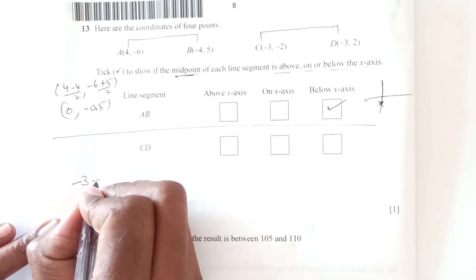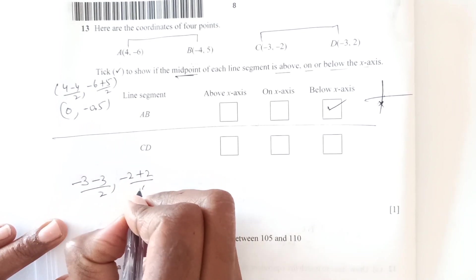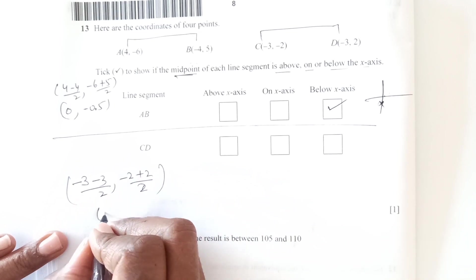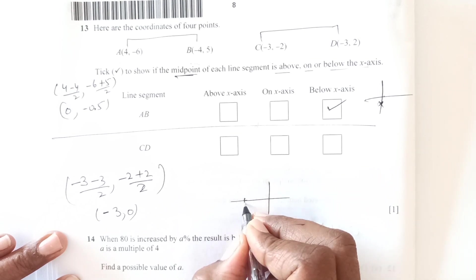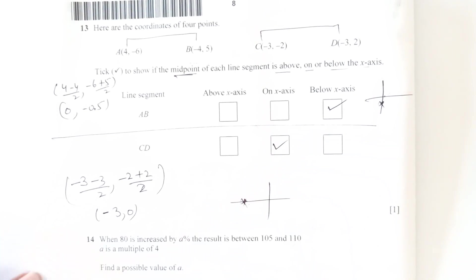Midpoint of C, D: 3 minus 3 over 2, then minus 2 plus 2 over 2. So this is negative 6 over 2 is negative 3 and 0. So negative 3 is this side somewhere and 0. So this is on x axis. So we will take this one.